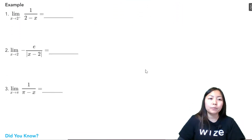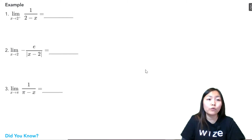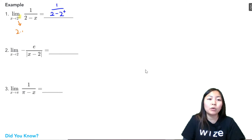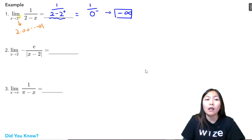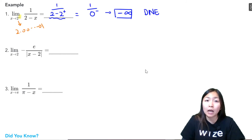Example 1: the limit as x approaches 2 from the right of 1 over (2 minus x). Direct substitution gives 1 over (2 minus 2⁺). Approaching from the right means something like 2.00001, so 2 minus 2.0001 gives something really small in the denominator — practically zero, but slightly negative. So this becomes 1 over 0⁻, which gives negative infinity because the overall value is negative. Negative infinity is not a finite number, so the limit does not exist.